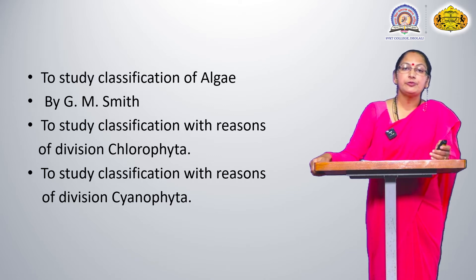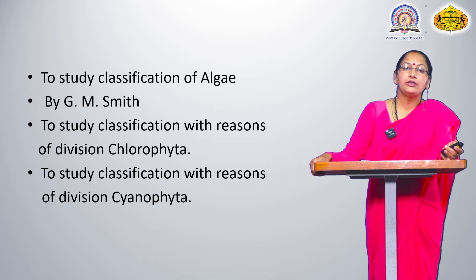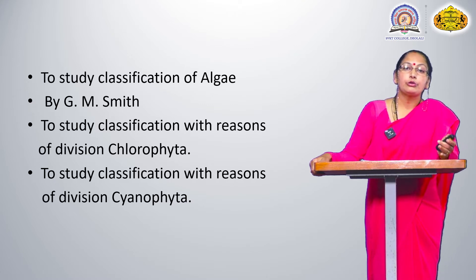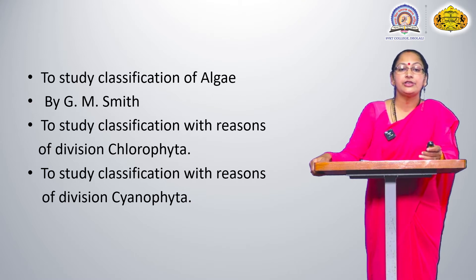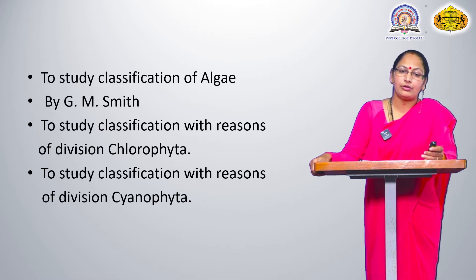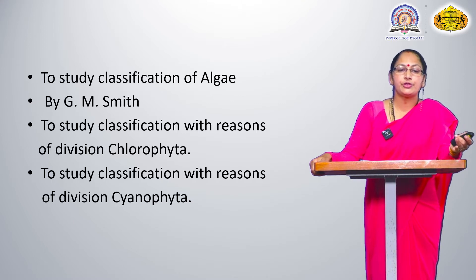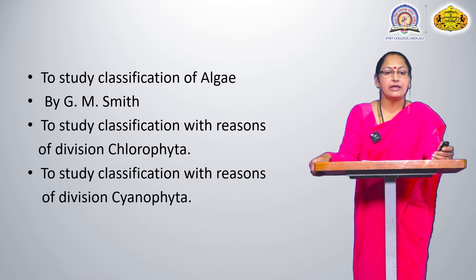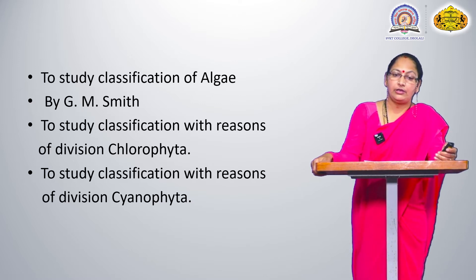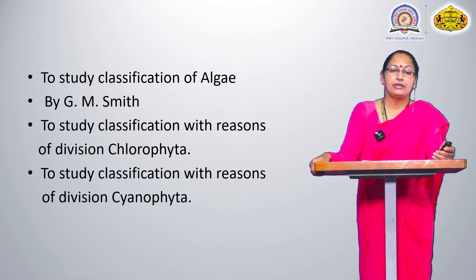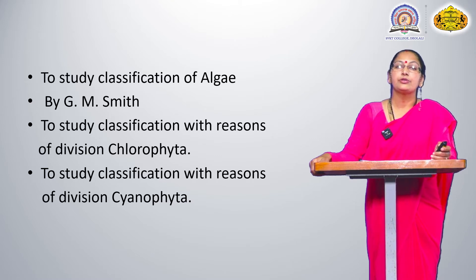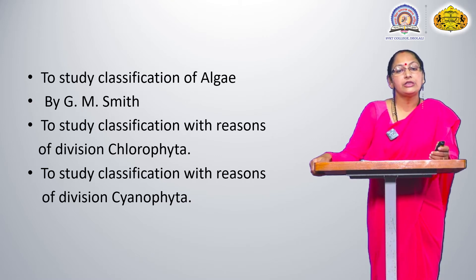G.M. Smith derived seven classes. The first class is Chlorophyta — we study the classification with reasons for division Chlorophyta as derived by G.M. Smith. The next class is Cyanophyta — we study the classification with reasons for class or division Cyanophyta.